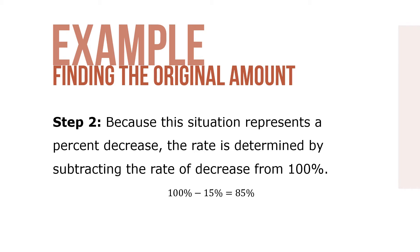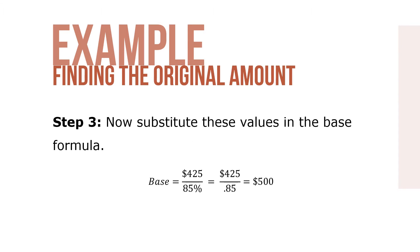Because the situation represents a percent decrease, the rate is determined by subtracting the rate of decrease from 100%: 100% minus 15% equals 85%. Step 3: substitute these values in the base formula. Base equals $425 over 85%, or $425 over 0.85, which equals $500.